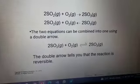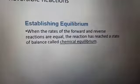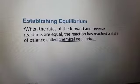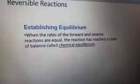After that I explained what is the meaning of equilibrium. It is the state at which the rate of the forward and the reverse reactions are equal, so the reaction has reached a state of balance called chemical equilibrium.